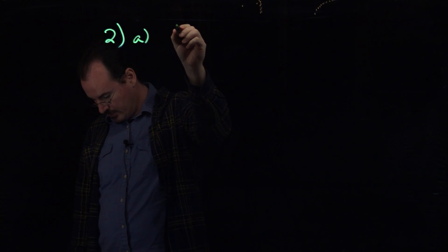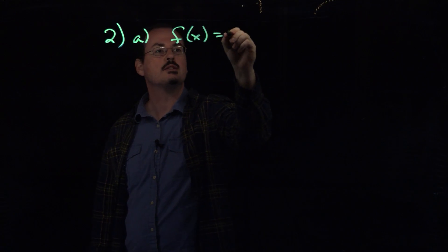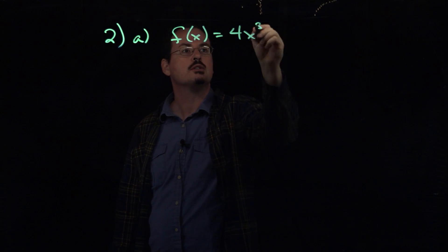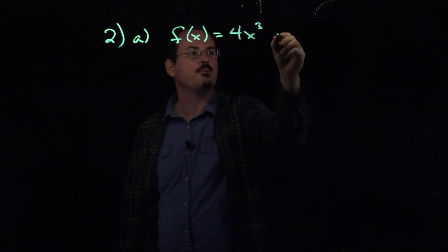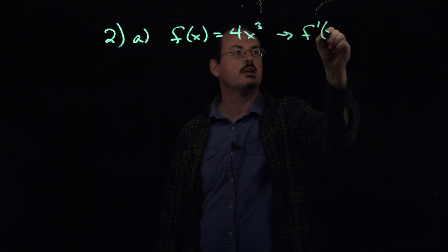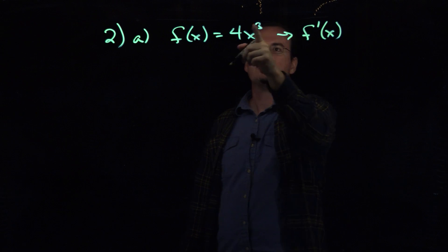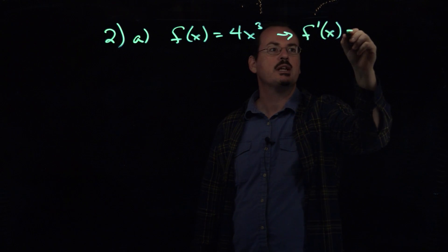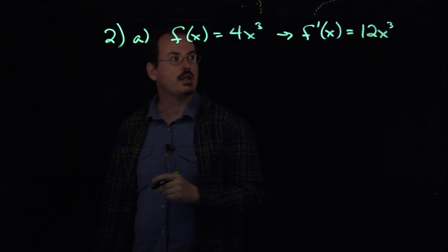So for 2a, we have the function f of x equals 4x to the third power. If I want to take the derivative of this, I basically just do the same thing that I did with the regular power rule, but since there's a number in front, I'm just going to multiply this. So I move this 3 in front and multiply it by the 4. I'm going to get 12x to the third power as the derivative.